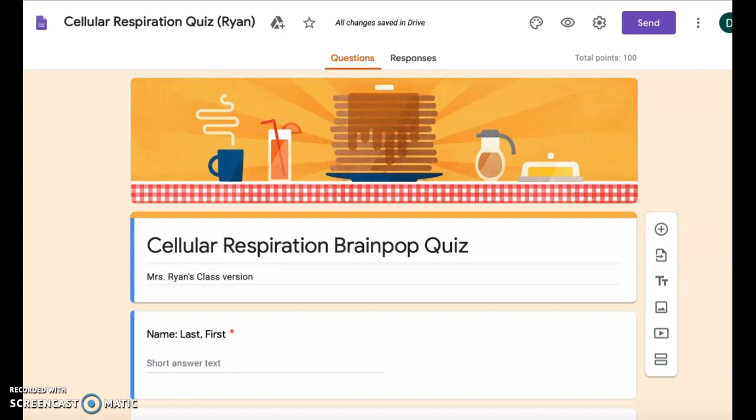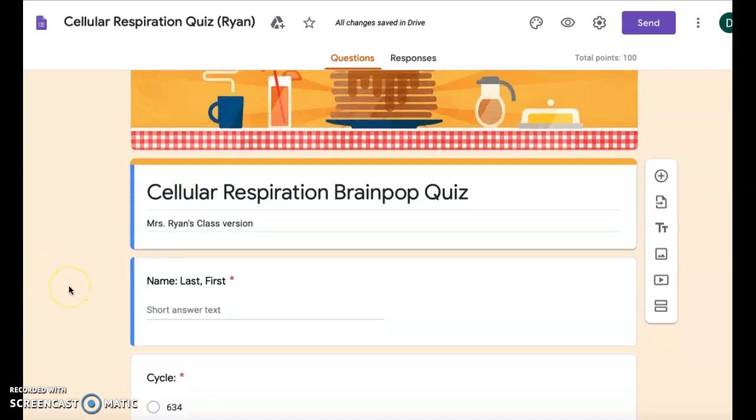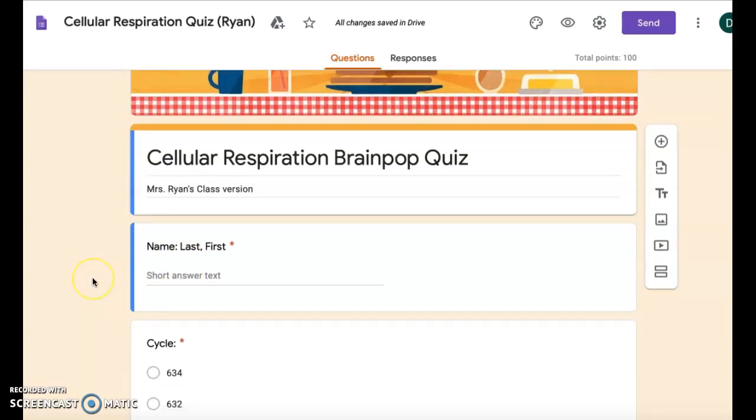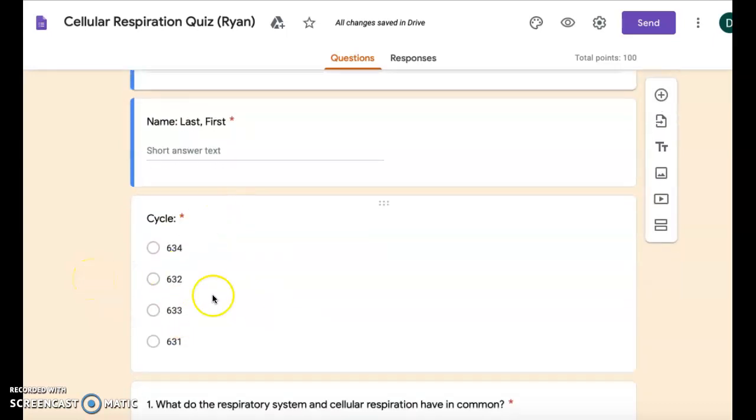Cellular respiration Brainpop quiz. You're first gonna write your last name and then your first name in the box here. You will then select your cycle number.